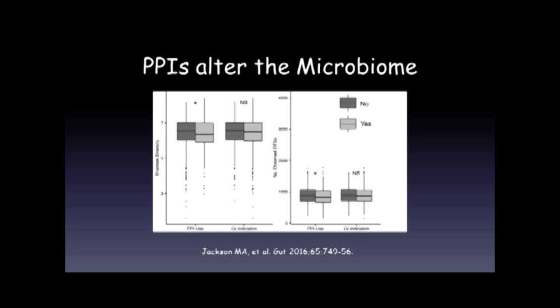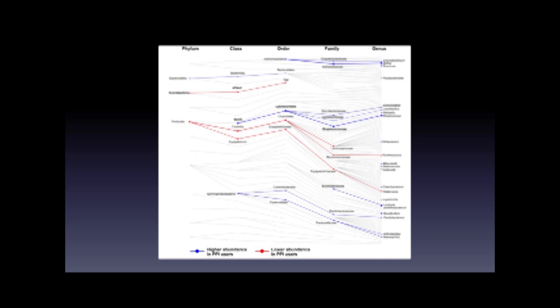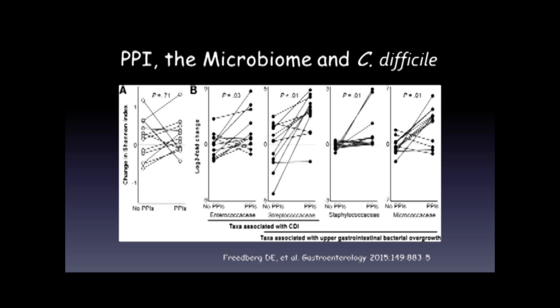One study looked at overall change in diversity and changes in specific bacterial species in patients receiving PPIs. It found that two taxa — Enterococcaceae and Streptococcaceae — were significantly increased in those who received PPIs. The importance of this is that they've been identified as risks for the development of C. difficile.